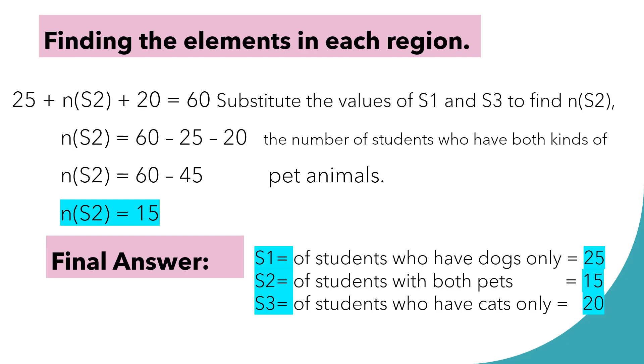So, the value for our S2 or the number of our set 2 is equal to 15. To summarize all the answers, this is the final answer. For our S1 of students who have dogs only, we have 25. For our S2 of students with both pets, we have 15. For our S3 of students who have cats only, we have 20.